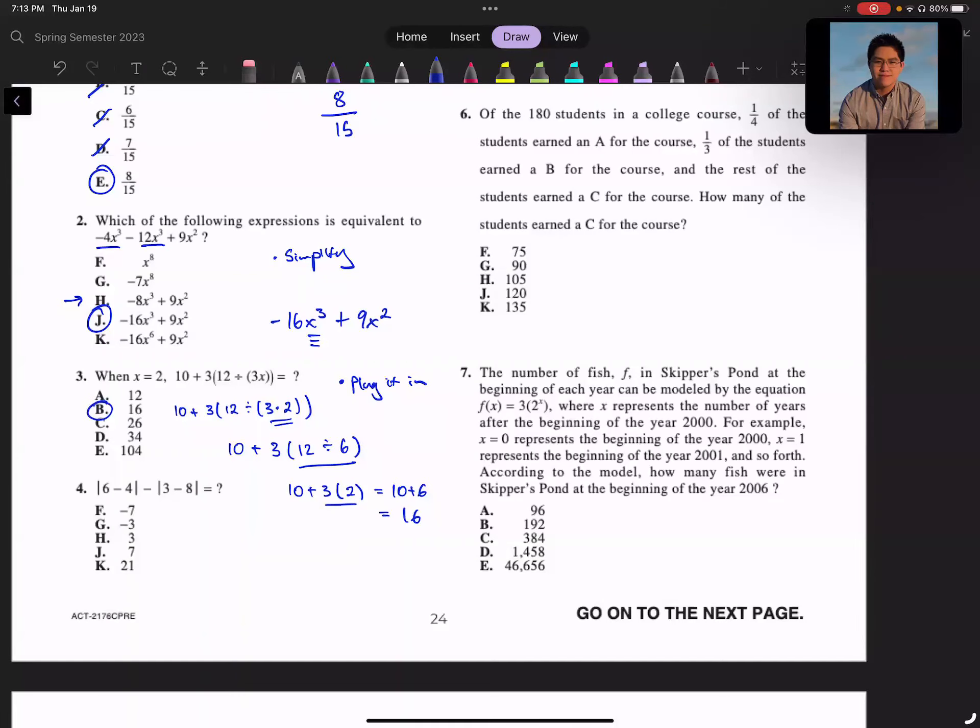Looking at the answers, yeah, it would make sense. I'd be really hard-pressed if I have a division that I get 104. 34 might be it, but looking here, 16 makes general sense. I'm going to move on.